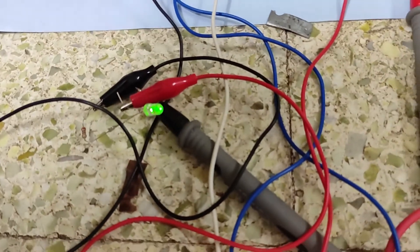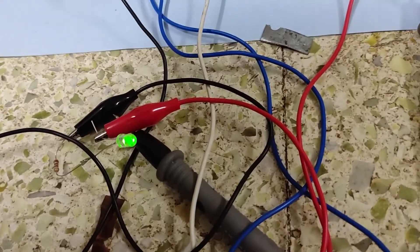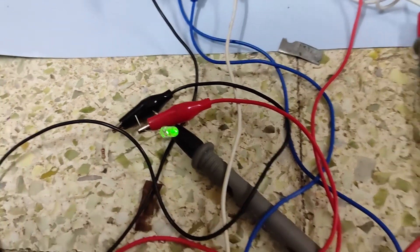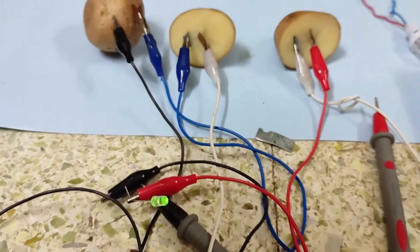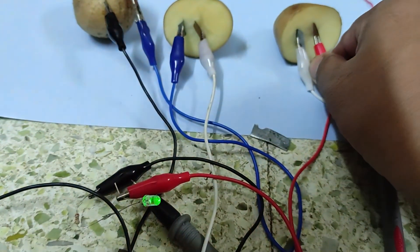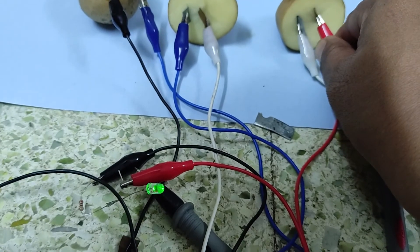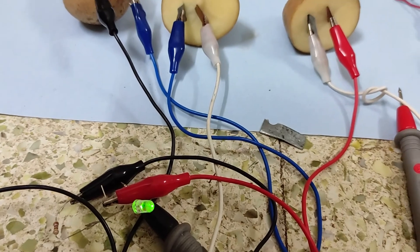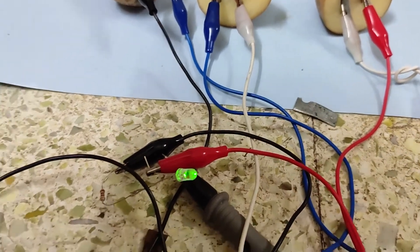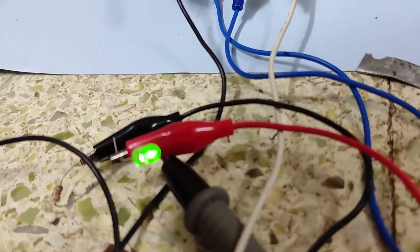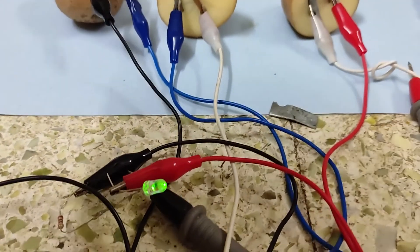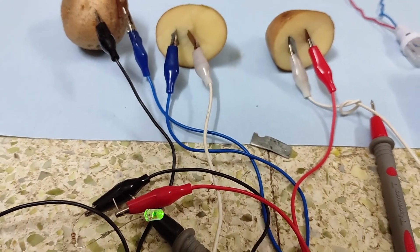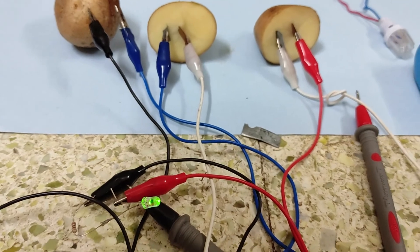Now, you can check the bulb is glowing. Green color bulb is glowing nicely. It is very beautifully glowing. You can check how it is glowing by removing and connecting the circuit. It glows nicely. This is how potato battery works. We are able to generate electricity from the electrolyte. It is a chemical reaction. That is a beautiful project to understand a lot of things.